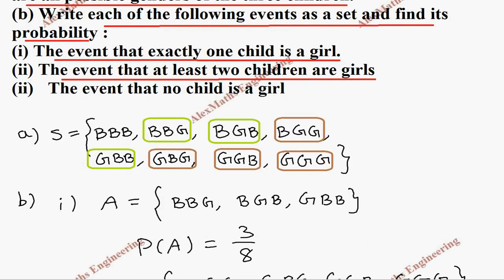Then third part: we have the event that no child is a girl. The event that no child is a girl—that is the only option where all are boys. This is the outcome where there is no girl, but other things are having at least one girl, one girl, two girls, or all three are girls.